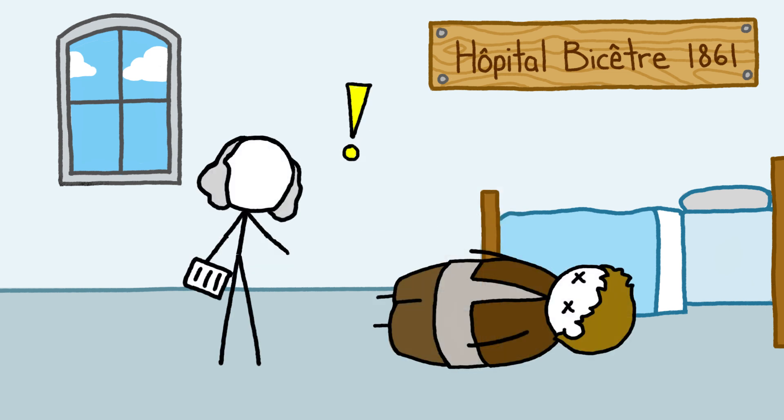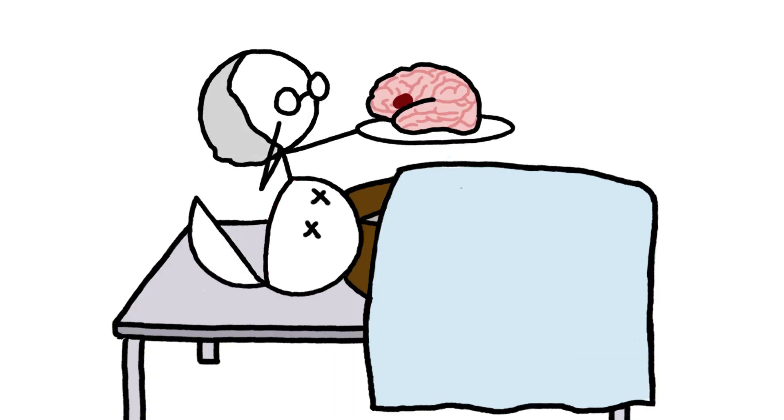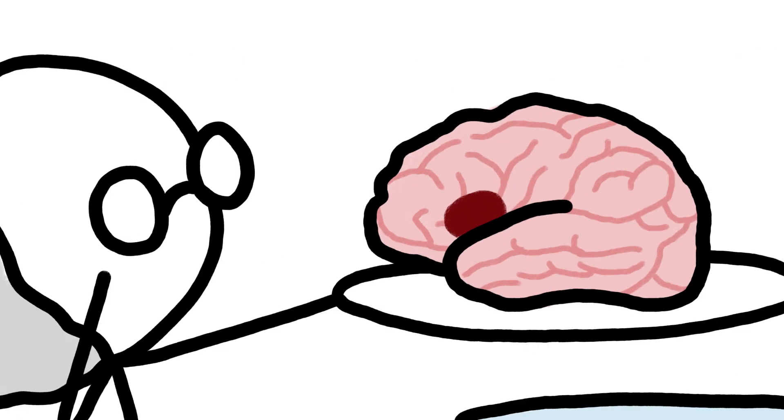When the patient unexpectedly died a few days later, Broca dissected his brain and found a small bit of damage called a lesion on the left frontal lobe, leading him to conclude that this part of the brain must be responsible for speech generation.